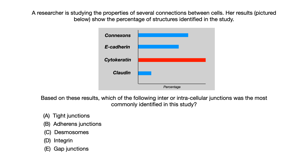So now we're kind of working backwards. The first step of any question like this is to be able to read the graph, and in this case cytokeratin was the most commonly identified. Now your brain needs to work backwards and ask itself: what type of inter- or intracellular connection do I see cytokeratin in? And if you can figure out the answer to that question, you'll get this question correct. The correct answer is C, desmosomes.